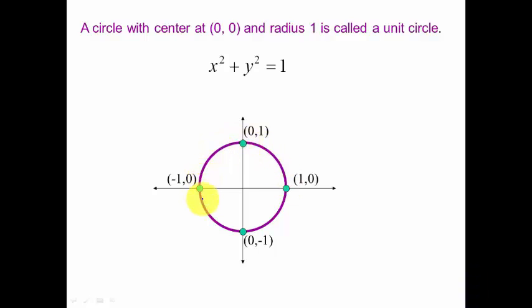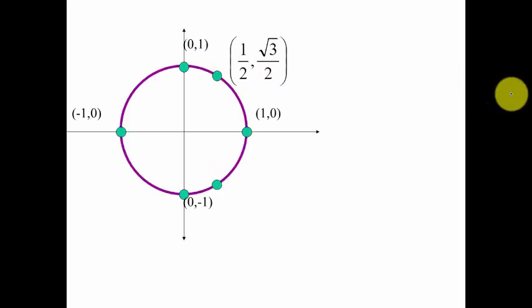So we easily know the points that lie on each axis there. And then we can get any other point on the circle if we choose an x, put it in this equation, and solve for y. For example, if we put x equal 1/2 and solved it, we'd get square root 3 over 2. So that's another point on our unit circle.